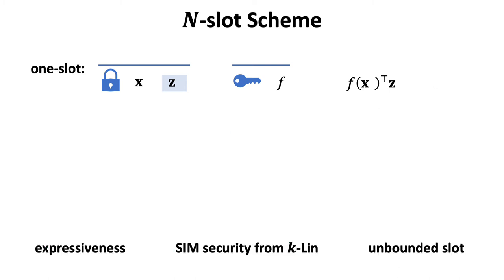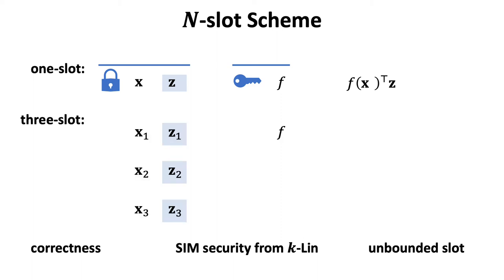With this basic one-slot scheme, we are ready to show how to build a scheme supporting unbounded n. Along the way, we will always concern about correctness, security, and the unbounded slot feature. For simplicity, we will give an example for the three-slot case, where X1, X2, X3 are public, Z1, Z2, Z3 are secret. Here, F is the function supported by the one-slot scheme.